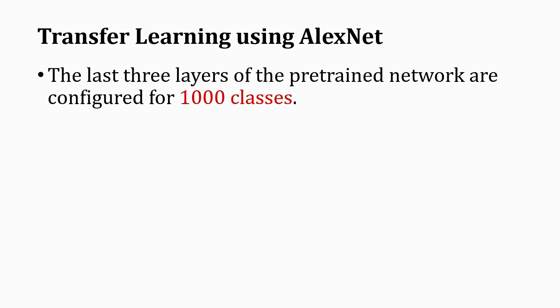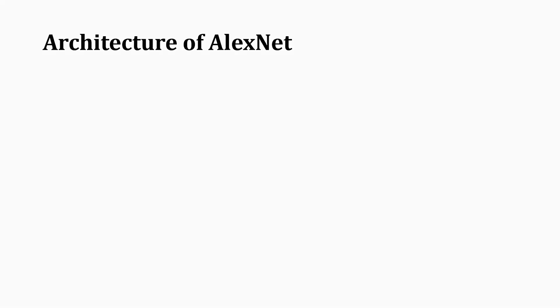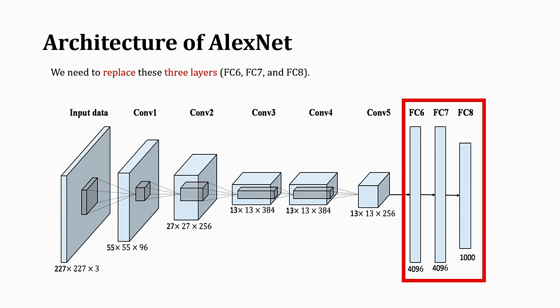The last three layers of the pre-trained network are configured for 1000 classes. These three layers must be fine-tuned for new classification problems, such as scene classification in our case. Specifically, we need to replace three layers — FC6, FC7, and FC8 — to prepare AlexNet for transfer learning.